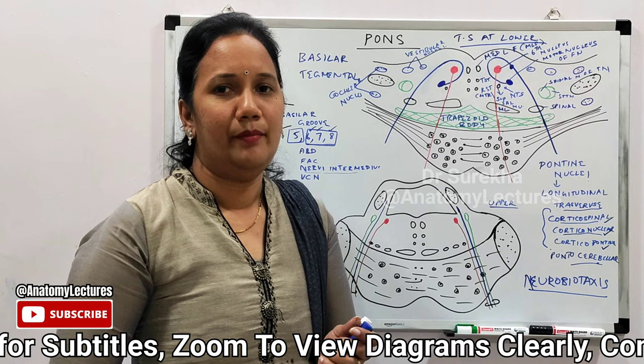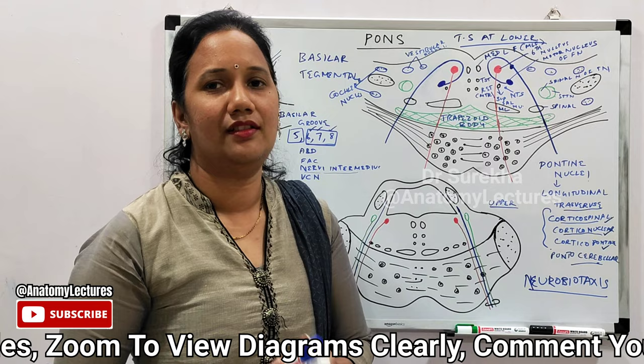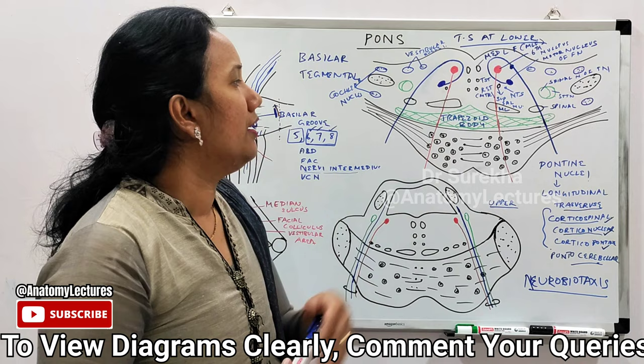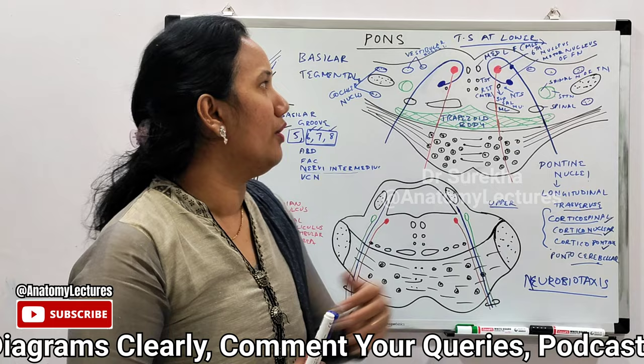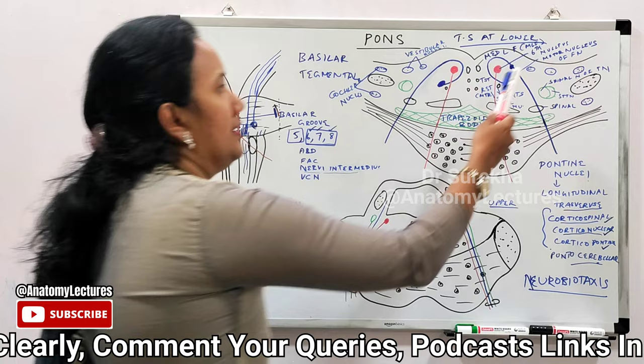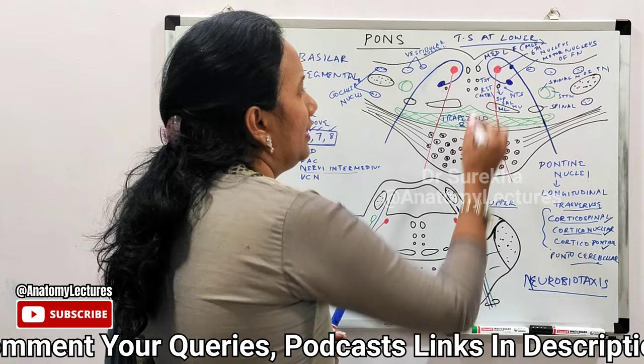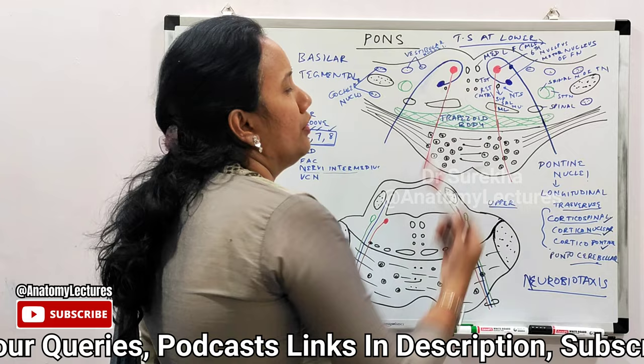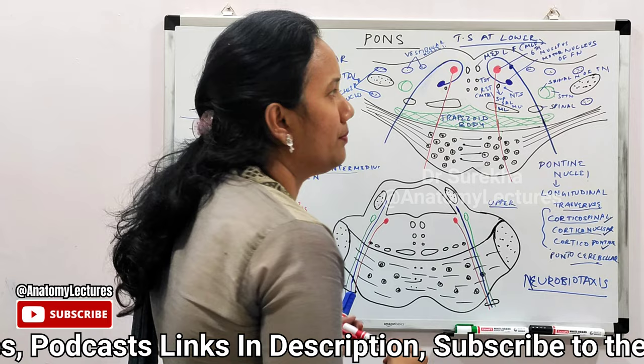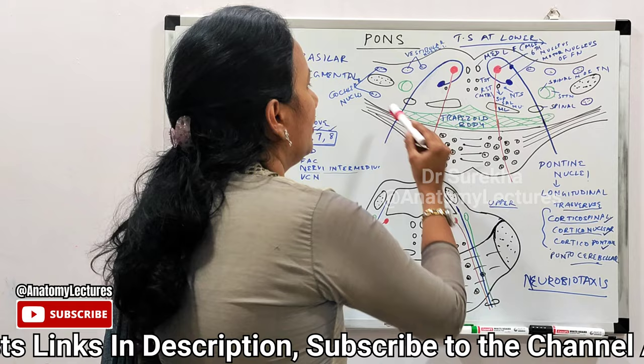To summarize the lower level section: we have seen the 6th, 7th, and 8th cranial nerve nuclei and their tracts; the medial longitudinal fasciculus, tectospinal tract, and rubrospinal tract in the paramedian position; the medial lemniscus; the spinal lemniscus lateral to it; the spinal tract of the trigeminal nerve; and the important trapezoid body.